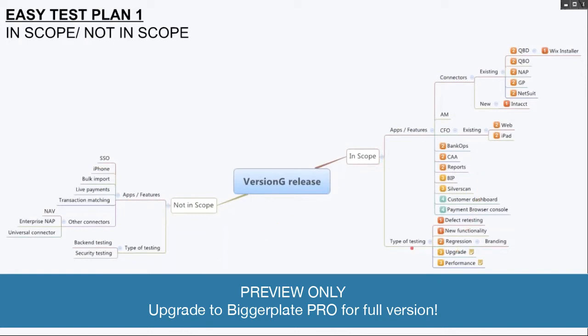You will specify what are the types of testing that you are doing. On the other hand, you will say what is not in scope for the release — what are the features that you will not be testing, and also specify the types of testing you will not be performing.